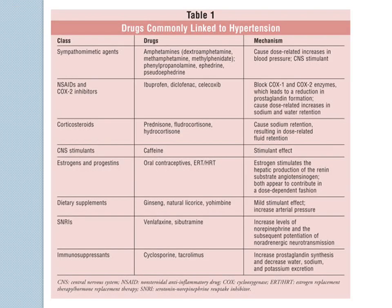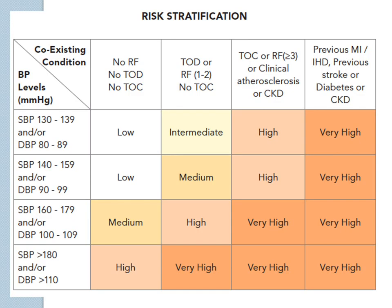This lists drugs commonly linked to hypertension. We're talking about longer-term consumption — it's not just taking it once and the pressure drops. If the patient is taking these drugs, it's risk stratification. TOD is target organ damage; TOC is target organ complication — details are in the next few slides.